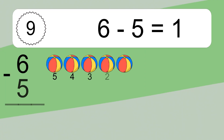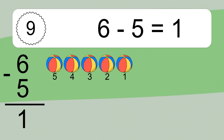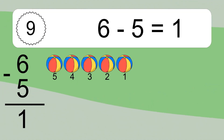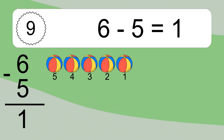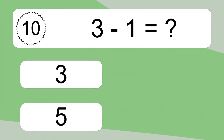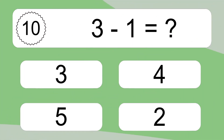6 minus 5 equals 1. Let's count it: 5, 4, 3, 2, 1. 7 minus 1 equals what?